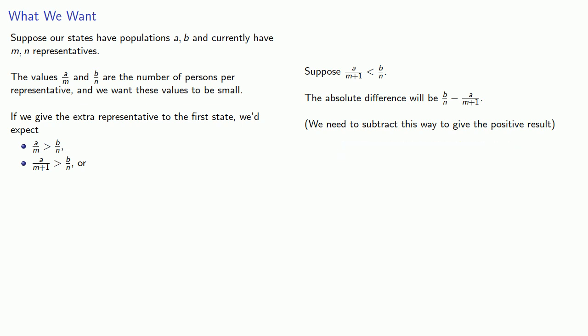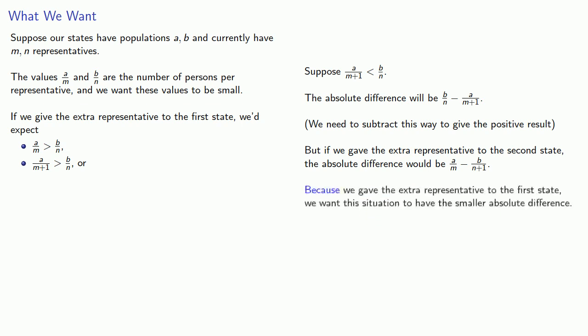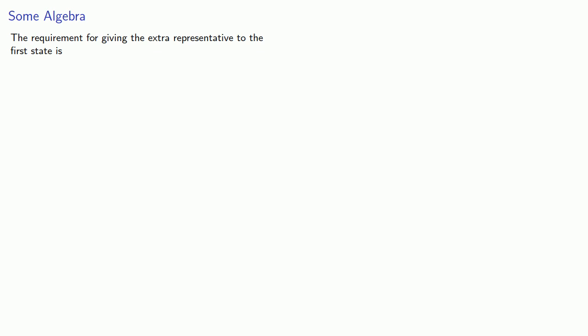Here's the important idea: we had to assign that extra representative to one of the states. If we gave the extra representative to the second state, the absolute difference would be A/M — the persons per representative in the first state that didn't get the extra representative — minus B/(N+1), the persons per representative in the second state that did get the extra representative. Because we gave the extra representative to the first state, we want this situation to have the smaller absolute difference. In other words, the absolute difference from assigning to the first state must be smaller than from assigning to the second state. The requirement for giving the extra representative to the first state is that this inequality is satisfied.